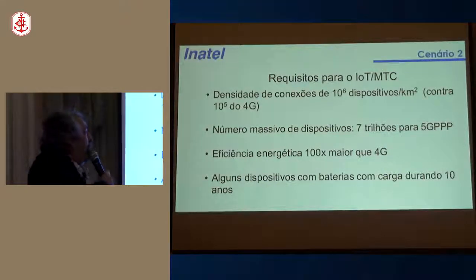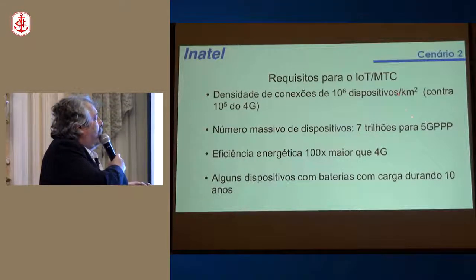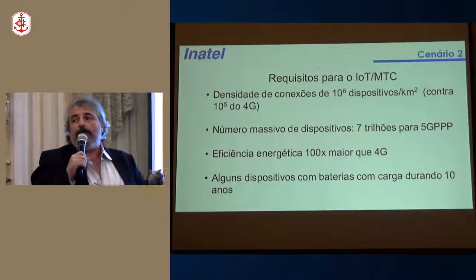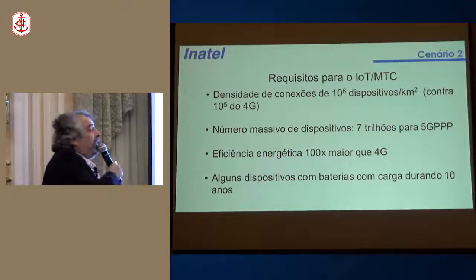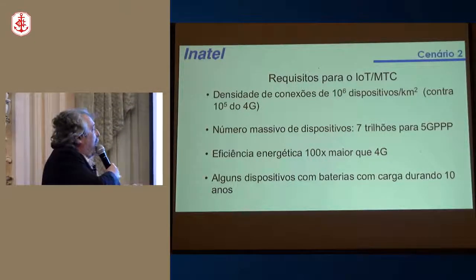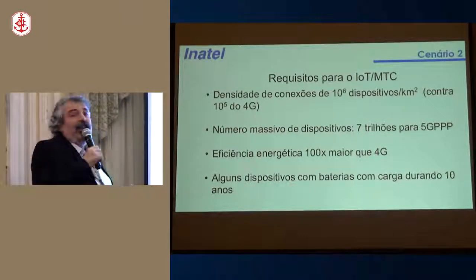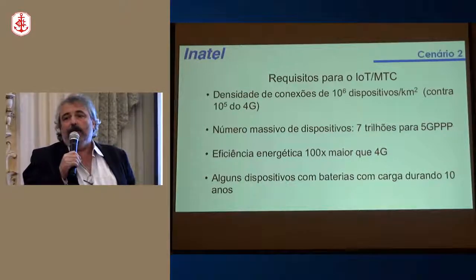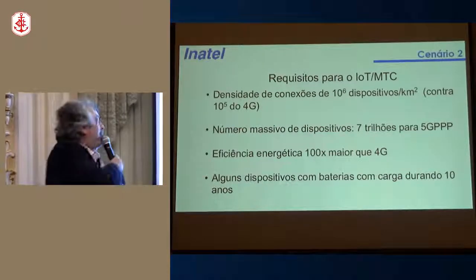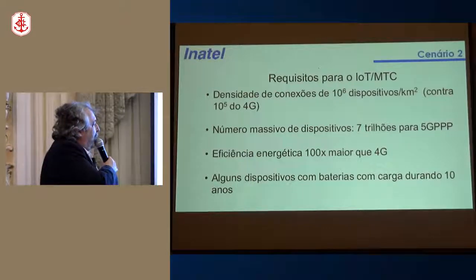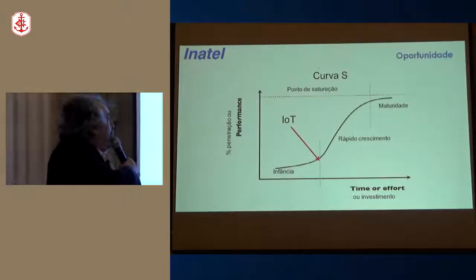Os requisitos para IoT no 5G são: densidade de conexões de 10⁶ dispositivos por quilômetro quadrado — 1 milhão de dispositivos por km² — contra 10⁵ do 4G, portanto 10 vezes mais. Há quem estime 7 trilhões de dispositivos de IoT no futuro, estimativa do 5G PPP. Também é necessária uma eficiência energética 100 vezes maior do que o 4G.